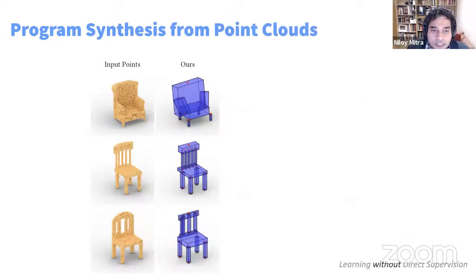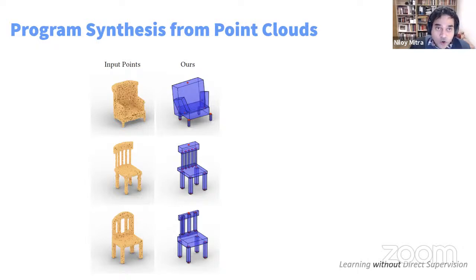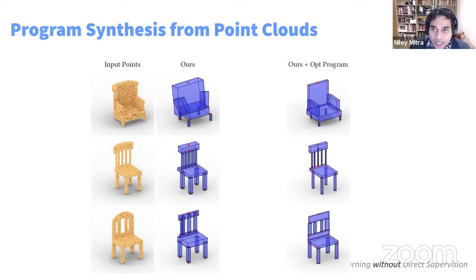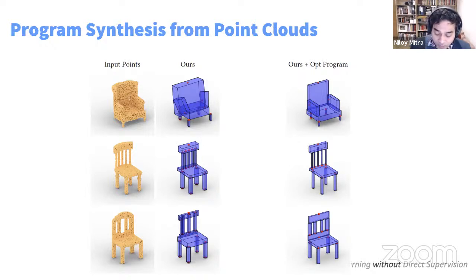We can train a separate encoder to go from point cloud or meshes directly into this program latent space. We can also optimize further because our DSL execution is differentiable, allowing refinement of the parameters.